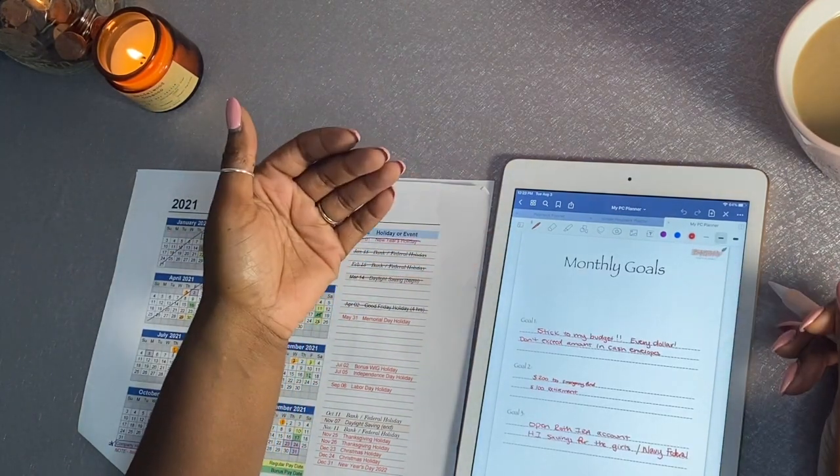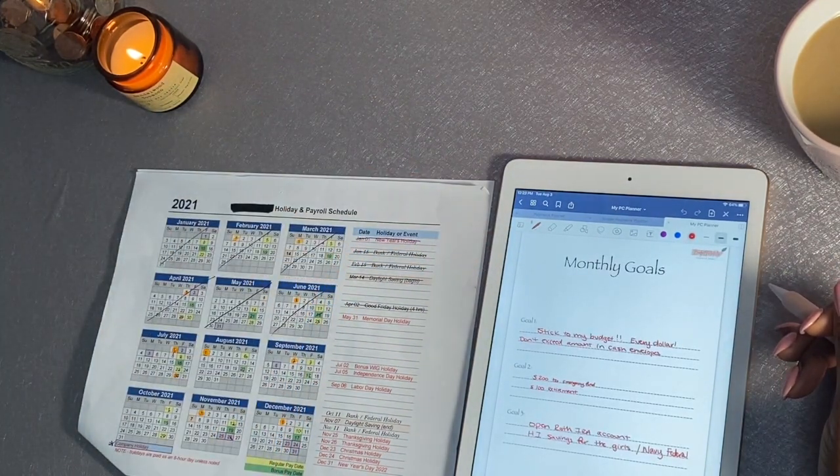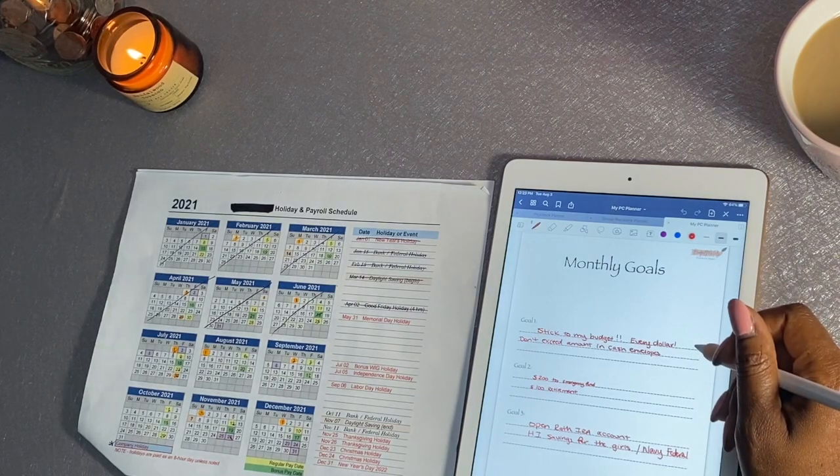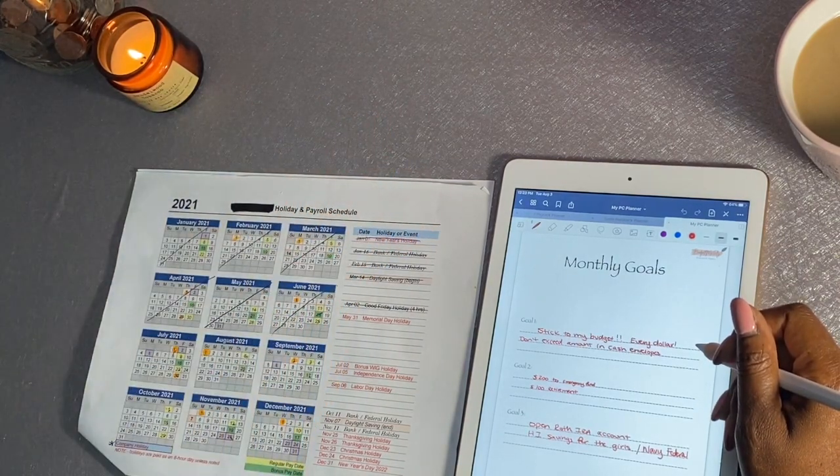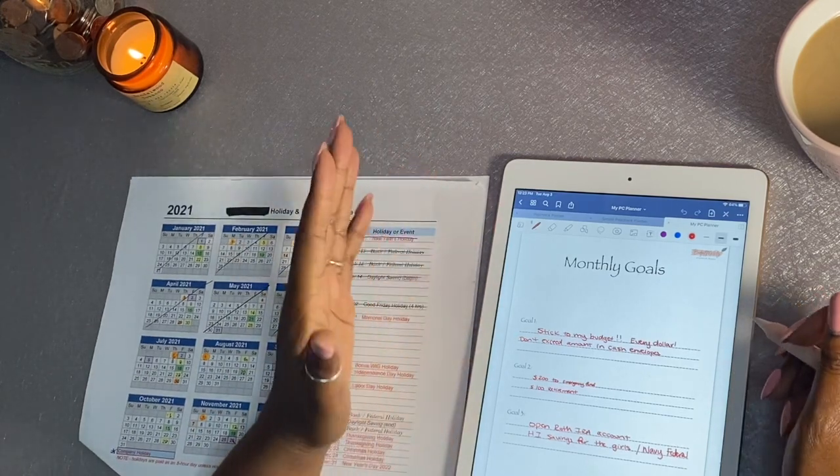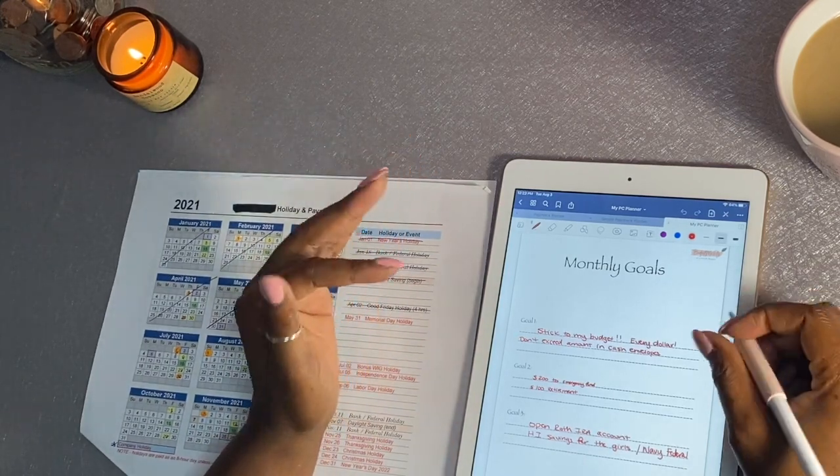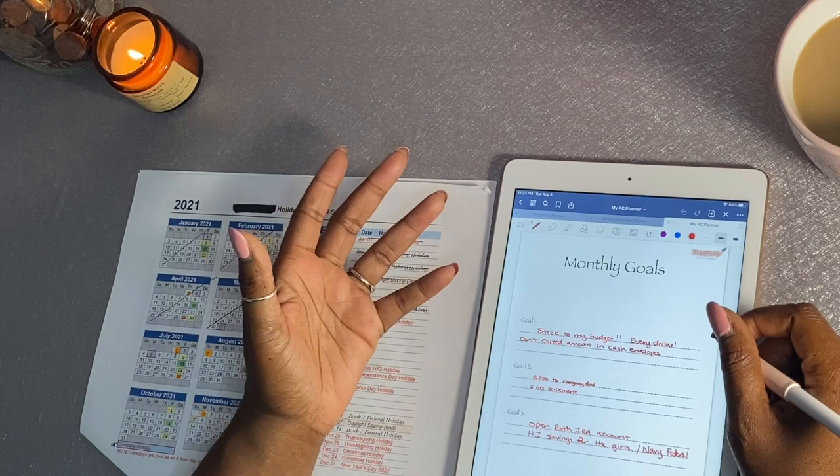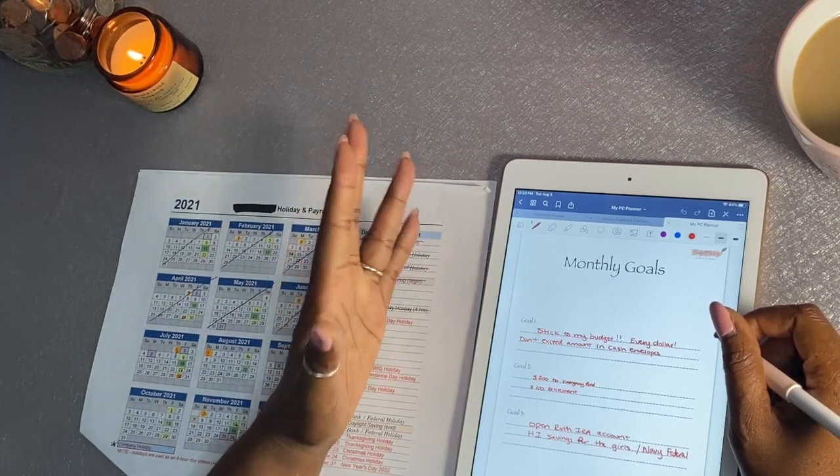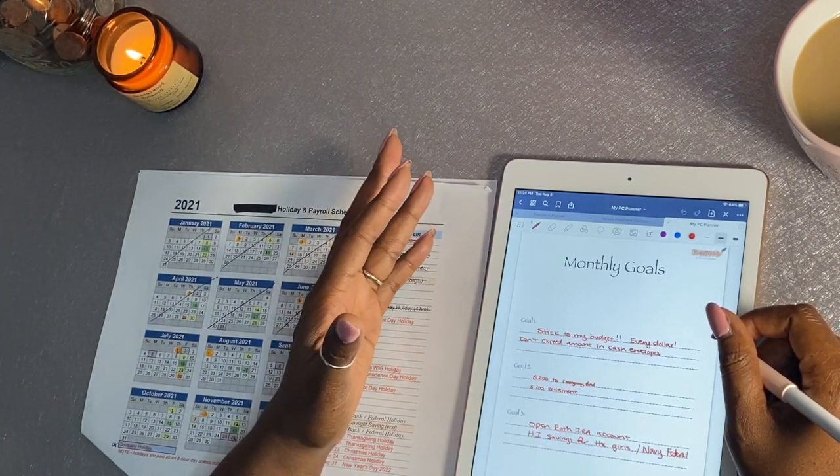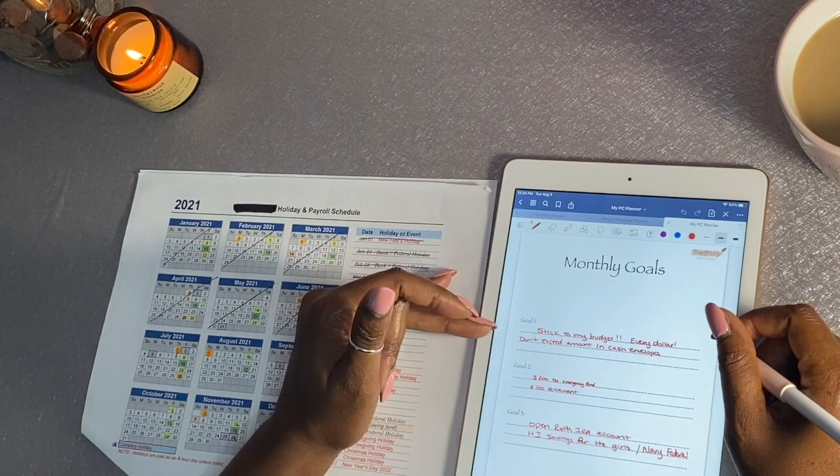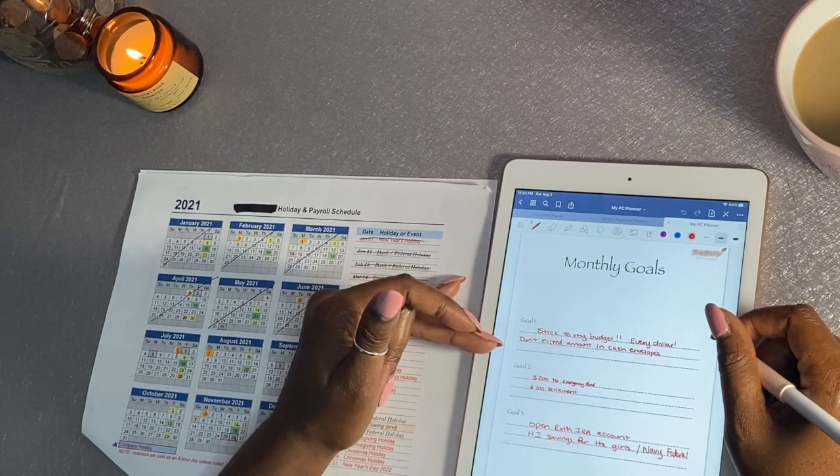So my monthly goals are pretty much stick to the budget. Like I said I'm new to this and I've made several missteps as far as allocating money and allocating enough money. So I'm still working out the kinks which I'm giving myself a lot of grace with, but main goal is to stick to the budget.